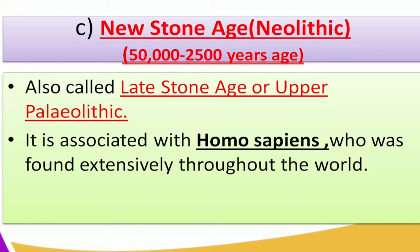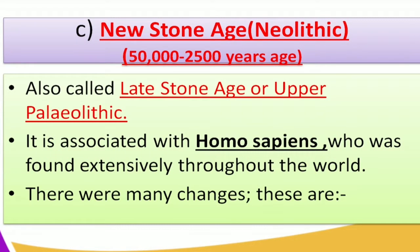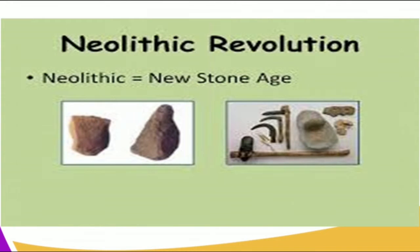When we say Homo sapiens, remember this is the intelligent man. This is a man that was found extensively almost everywhere in the world. There were many changes that occurred in this period of time, and we are going to look at them. But first you need to understand the Neolithic revolution.